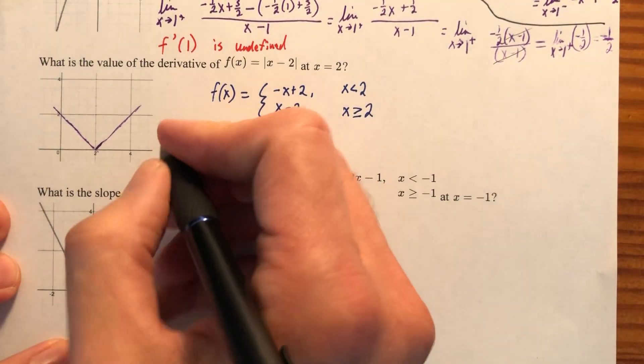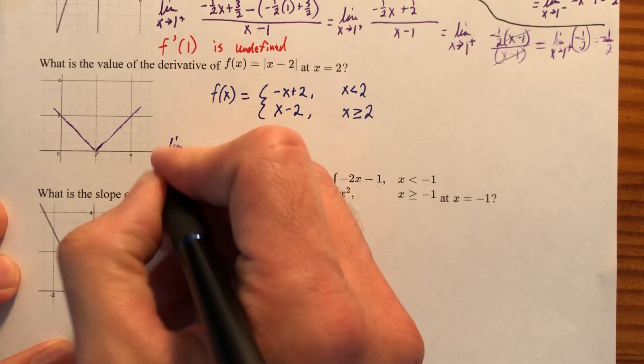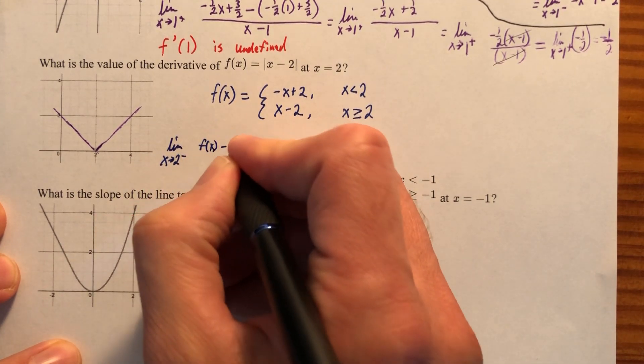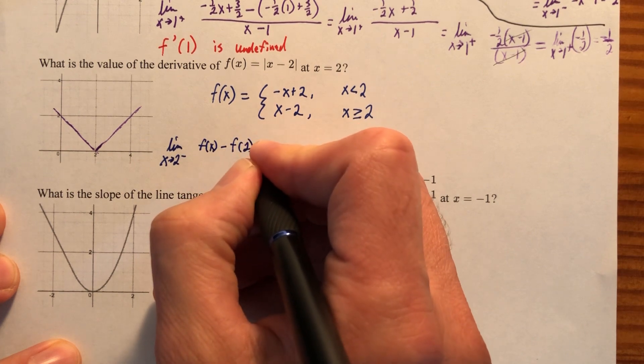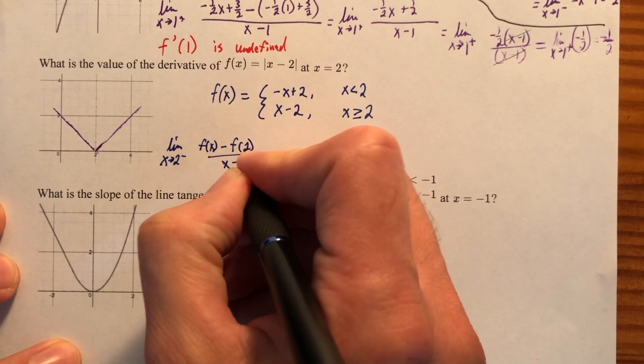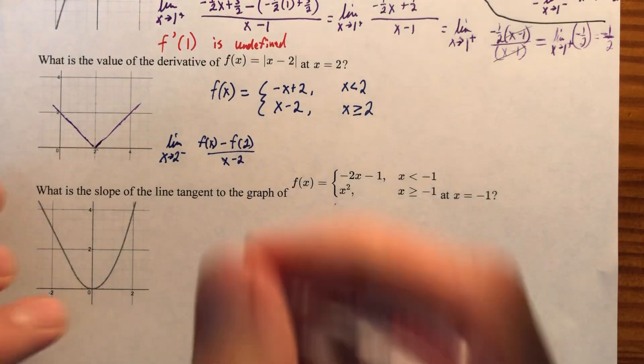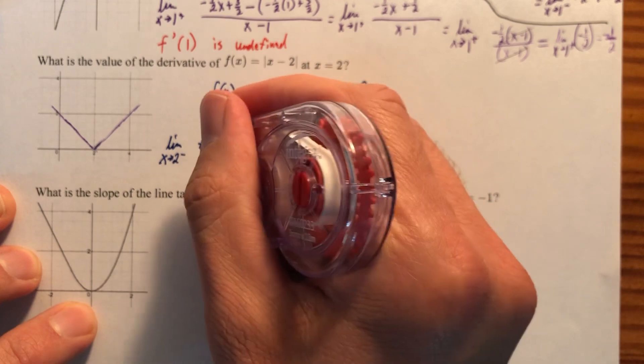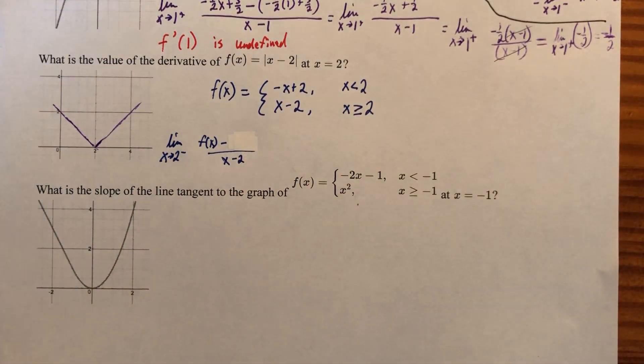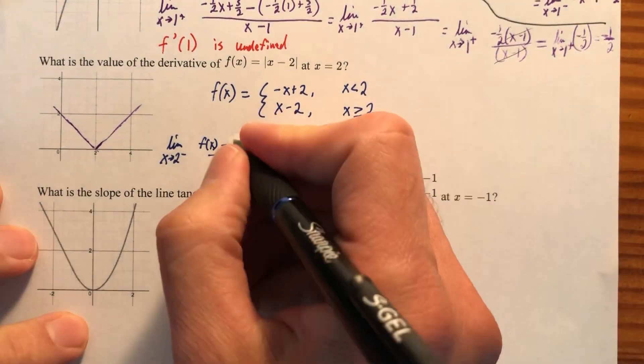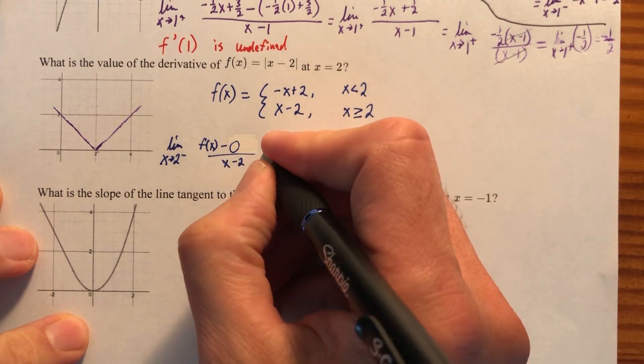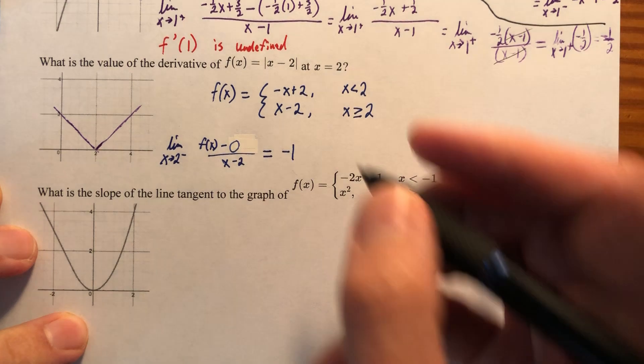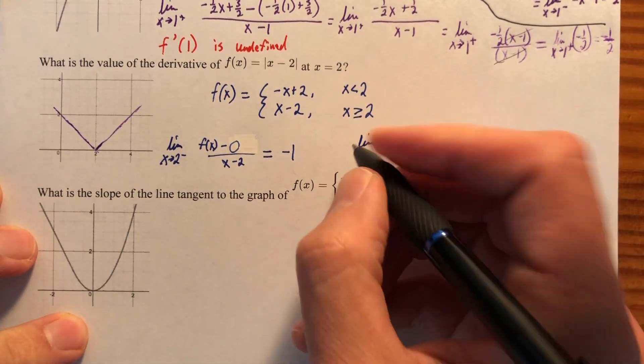So if we wanted to represent it differently, we could say that the slope as x approaches 2 from the left of f of x minus f of 2 over x minus 2. And I'm going to change a little bit here. I would say f of 2, but again, technically it wouldn't equal there if we're going to follow that hard and fast rule. But that would just be zero is going to be equal to, well, negative one, because it's the slope at that point.